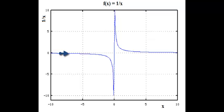When X is negative, large, and going towards zero, then 1 over X goes toward negative infinity.